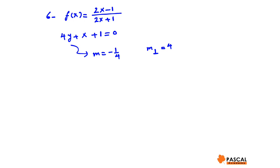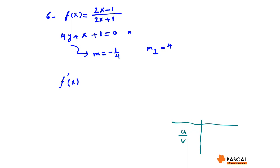We are looking for the points on the graph of y equals f of x at which the tangent line is perpendicular to the given line. That means we are looking for the point at which the slope of the tangent line equals 4. The slope of the tangent line is the derivative, so we find the derivative of the given function using the quotient rule.